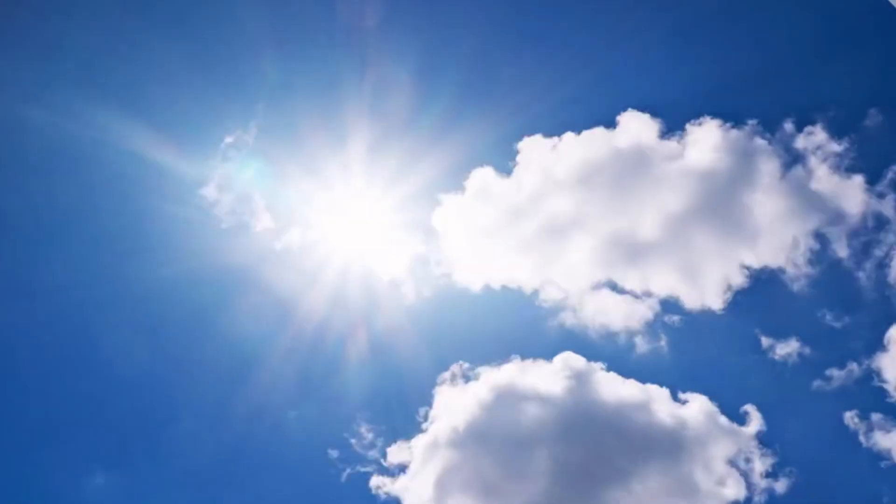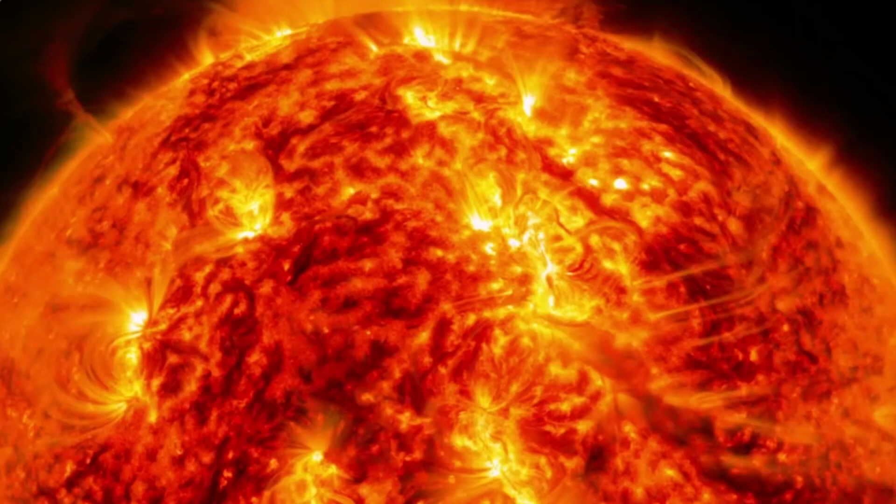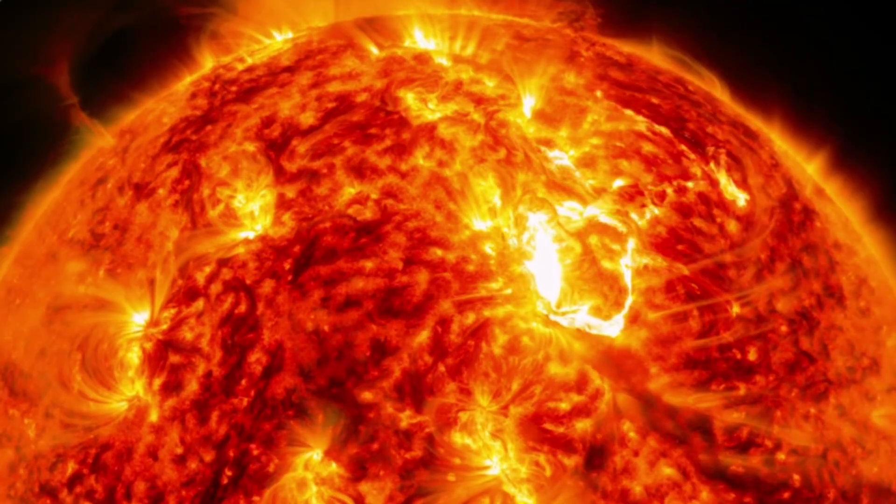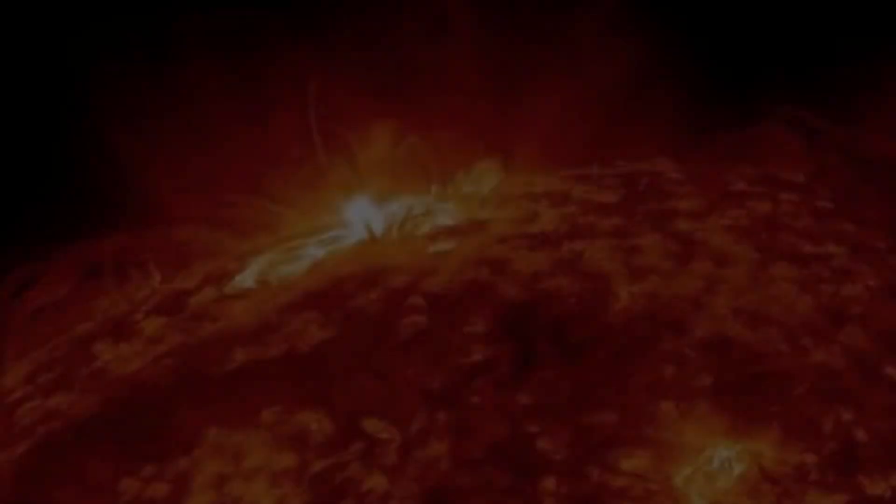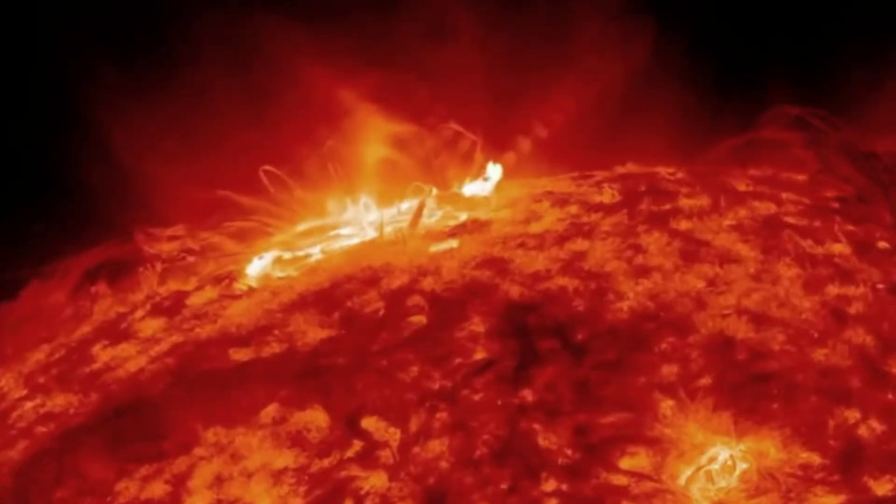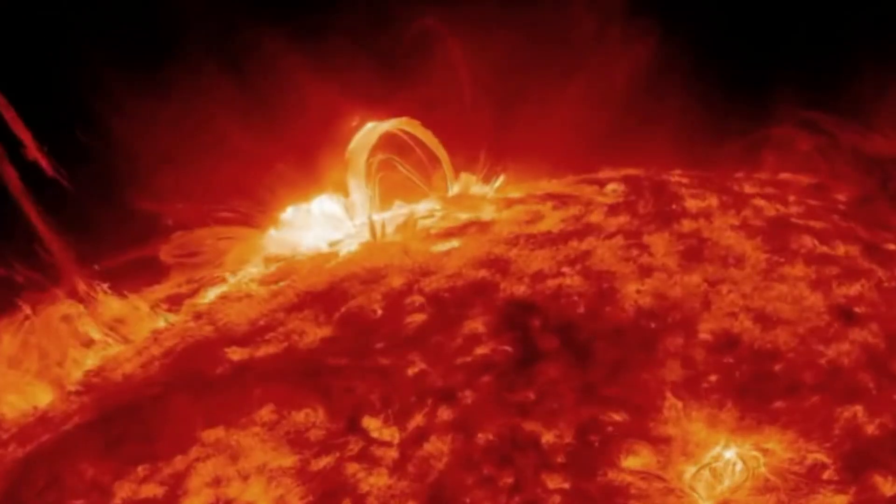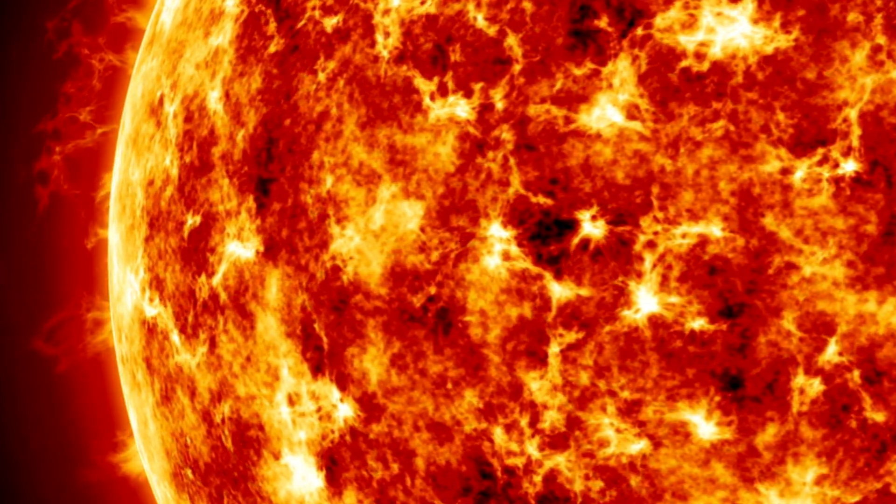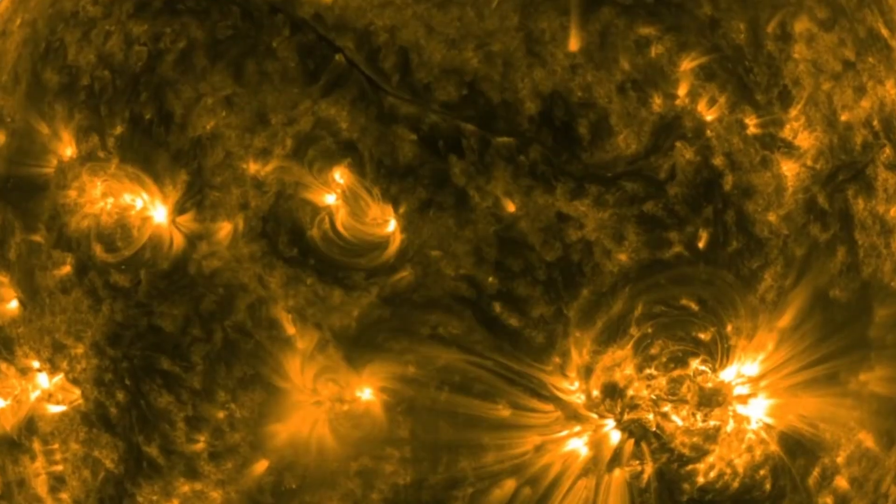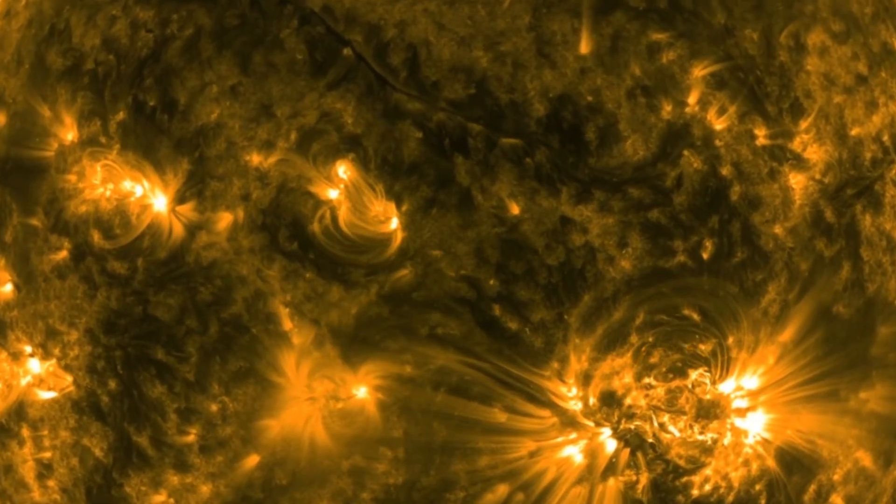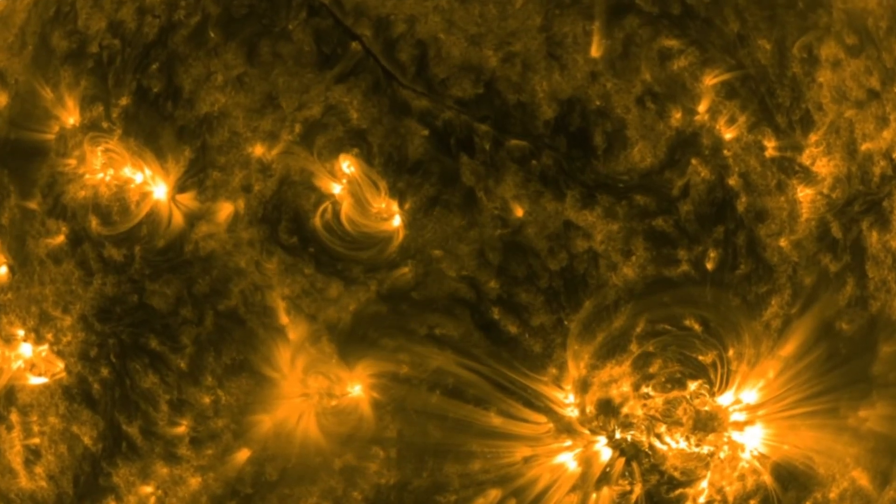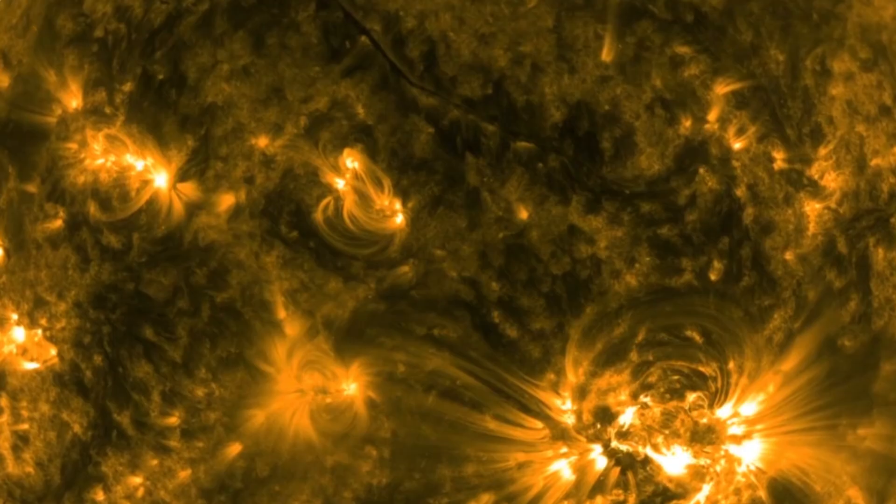The sun isn't just some glowing dot in the sky. It's a living, breathing monster of cosmic energy, a swirling, explosive sphere of fire that shapes everything from the weather on Earth to the fabric of the solar system. From its violent surface eruptions to the mysterious depths of its core, the sun is a masterpiece of nature, beautiful, chaotic, and still largely unexplored. Despite everything we've learned, it keeps its biggest secrets buried deep inside, and maybe that's what makes it so mesmerizing. It's not just our star. It's our connection to the cosmos.